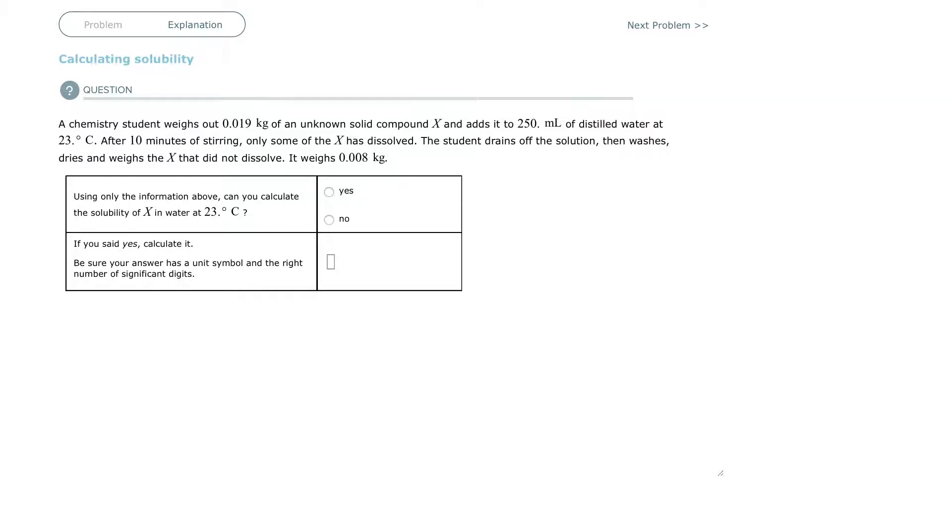All right, so we have 0.019 kilograms of solid. And then the student drains off the solution. The stuff that's dissolved, he pours off. He washes, dries, and weighs the stuff that didn't dissolve. So he weighs the solid that was at the bottom of the beaker,